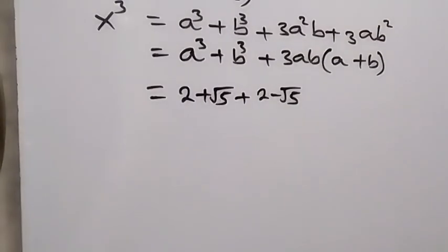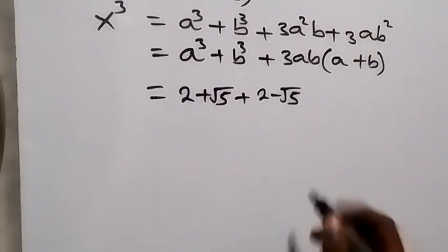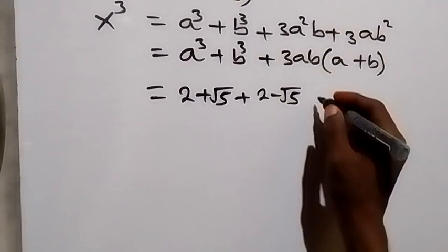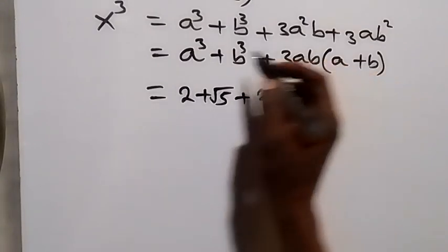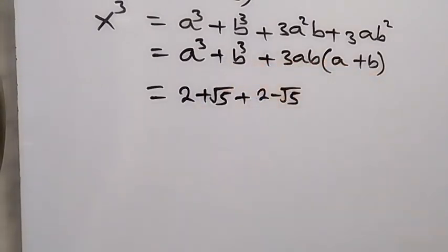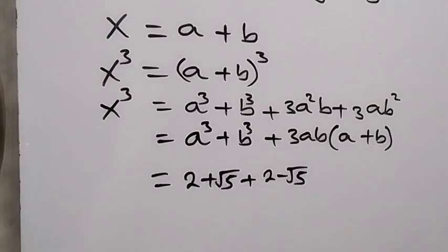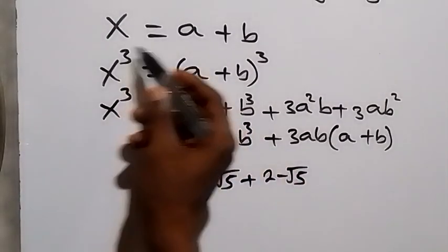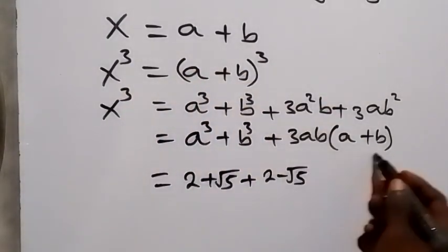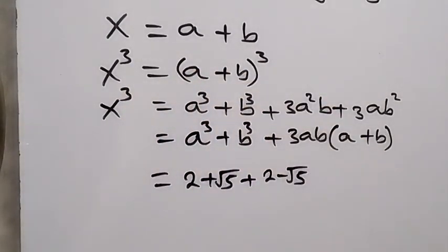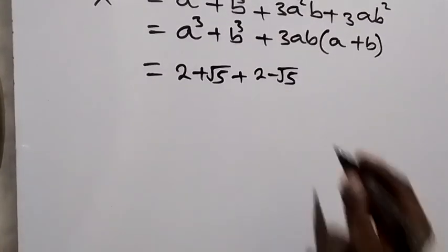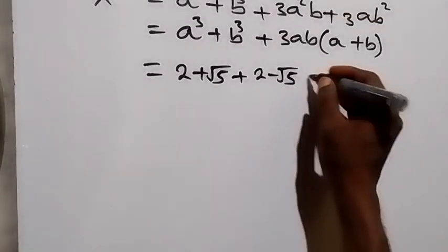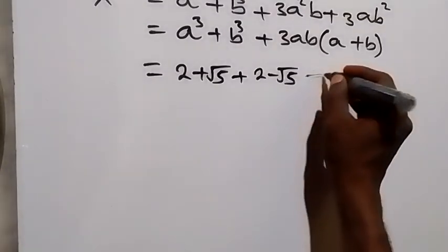We have this as a + b, and we represented a + b as x. So instead of writing a + b here, we write x. We then have x cubed equals (a³ + b³) plus 3ab times x.